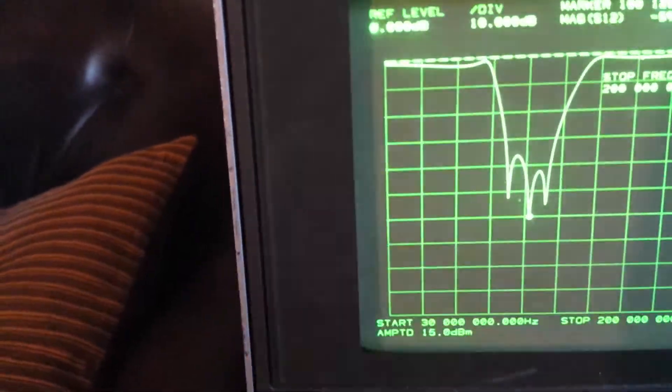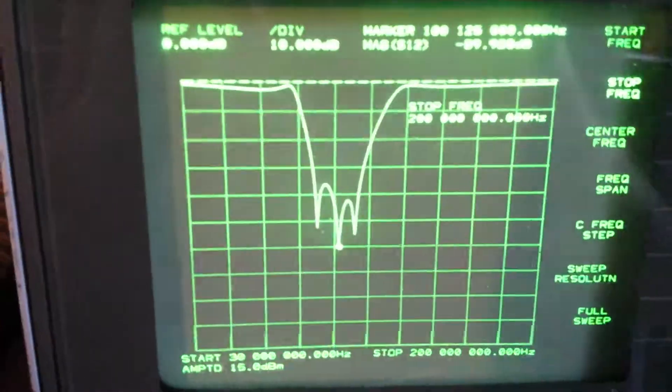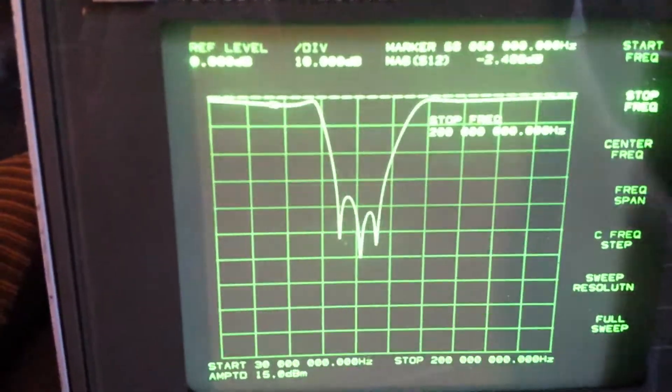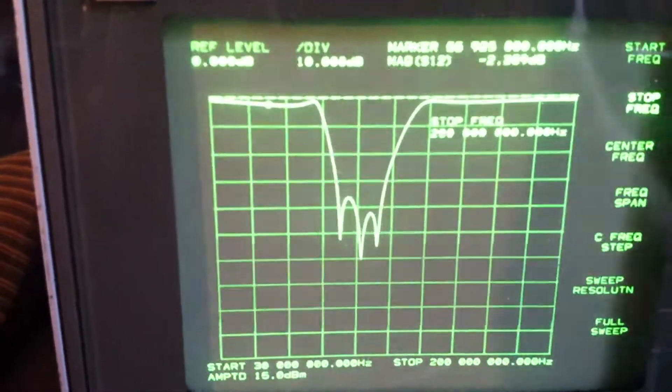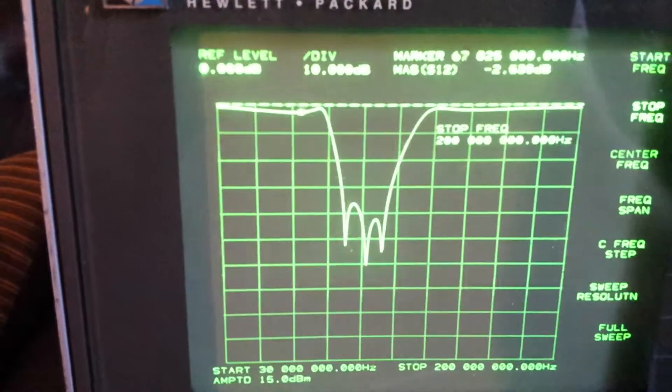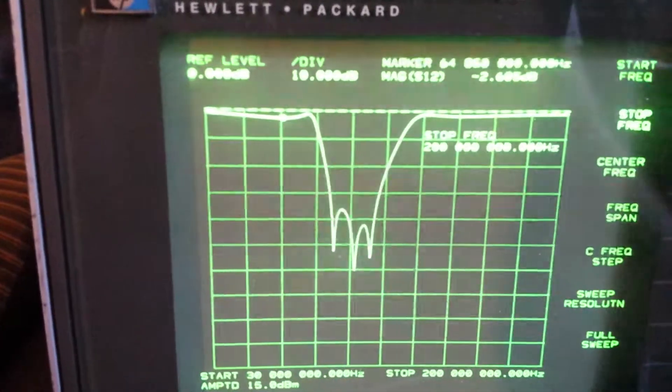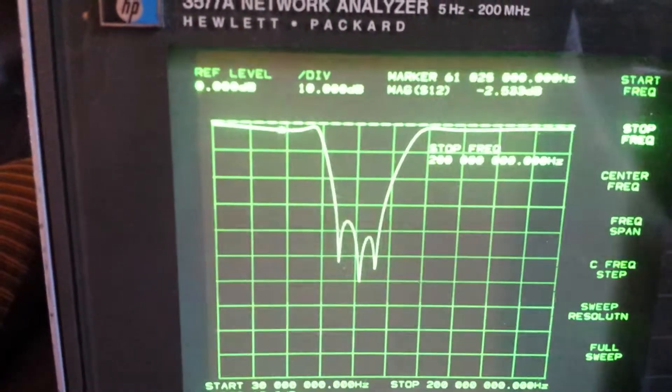So here's what it looks like in a wide sweep from 30 to 200 MHz. And there's a little insertion loss. Some of this could be my adapters. Unfortunately, I had to use a few adapters because that thing has F connectors on it.